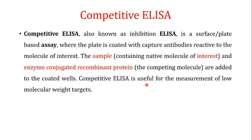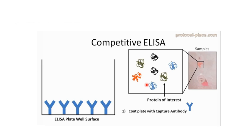The competitive ELISA is very useful for the measurement of low molecular weight targets. I'll walk you through all the steps involved and how to interpret your results — which results are positive or negative, and which show higher or lower quantity of your target in the sample. For example, your sample contains a variety of proteins, but we are interested only in the green one — your protein of interest.